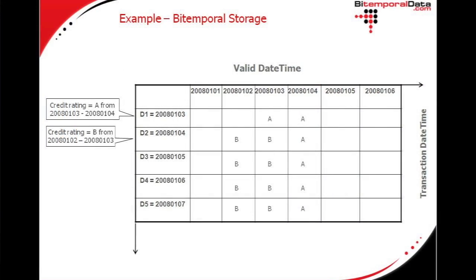Then we get our next event: on day two, the credit rating is B for the second and the third. Not surprisingly, the columns for the second and the third become populated starting on day two. An interesting thing to note about the second event is this is our first example of a correction — we've corrected the value of what the credit rating was on the third. It wasn't A; it was B.